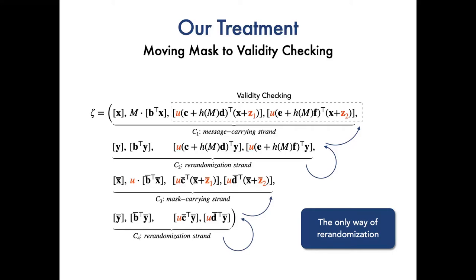The randomization of strands C1 and C2 is still restricted by mask U and vector Z1 and Z2. As for strands C3 and C4, their randomization is restricted by mask U and vector Z1 and Z2. The blue arrows illustrate the only way to randomize ciphertext. Note that the ciphertext construction of our variant still shares some similarities with that of the PR scheme. It is essentially a double strand of CS.